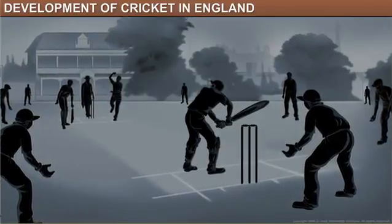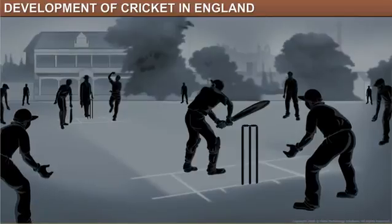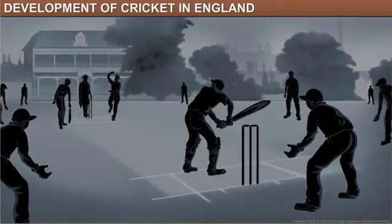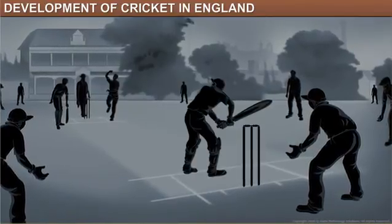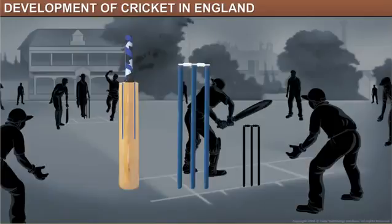While cricket has evolved over the ages, cricketing equipment is still made by hand using natural pre-industrial material. The bat, stumps and bails are still made of wood, while the ball is made of leather, twine and cork.